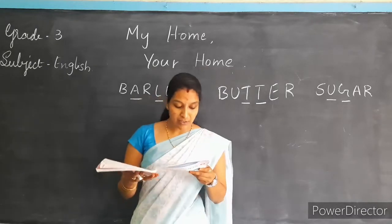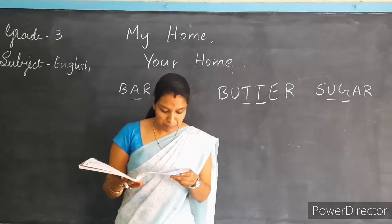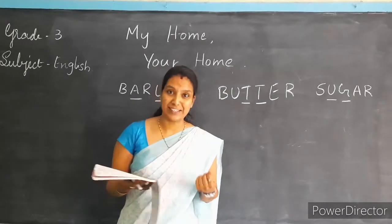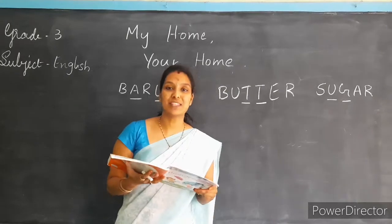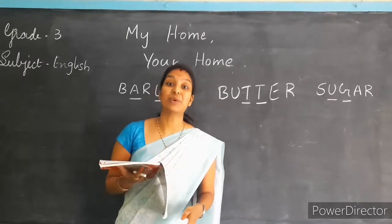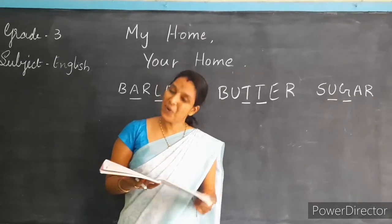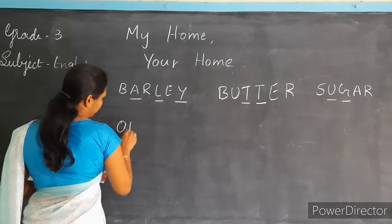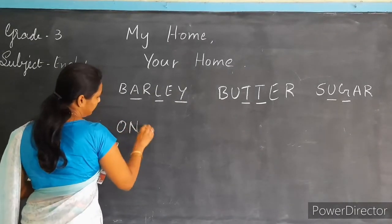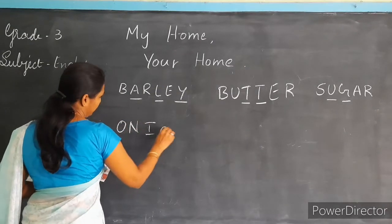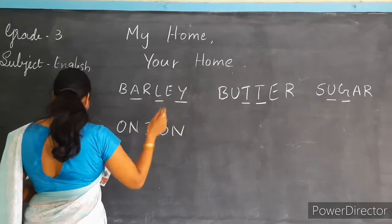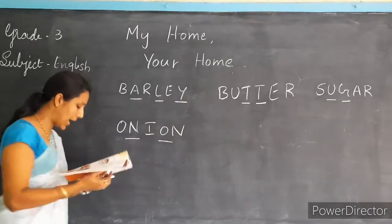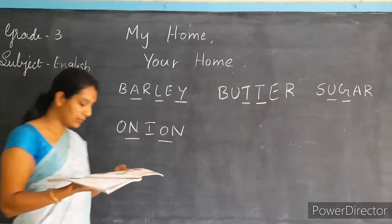When you chop me, I can make you cry. Hope you all have seen your mama crying while chopping something. What is that? Onion! What is the spelling of onion? O-N-I-O-N.